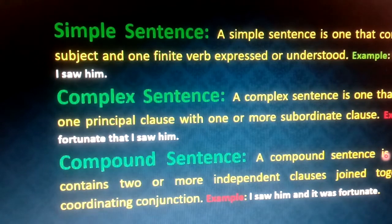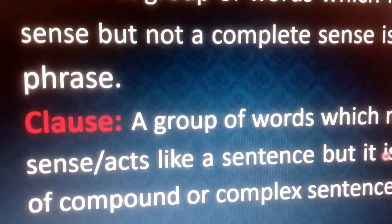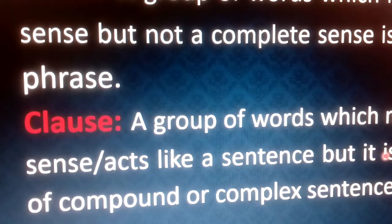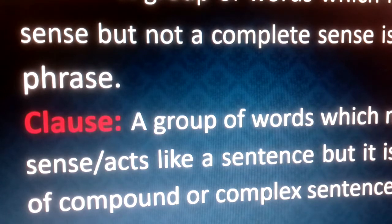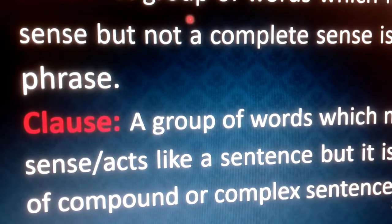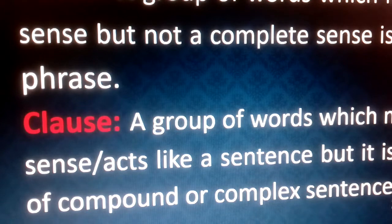A compound sentence is one that contains two or more independent clauses joined by coordinating conjunctions. Whenever you study complex or compound sentences, you will see that somewhere you need to use a phrase and somewhere a clause. In a simple sentence, a phrase is very much used. What is a phrase? A group of words which makes a sense but not a complete sentence is called a phrase — it is some words which convey a meaning but not a complete sentence meaning.